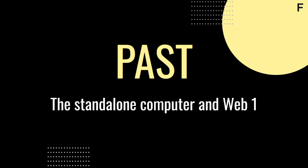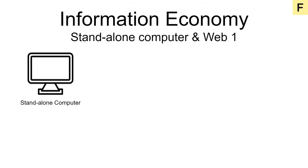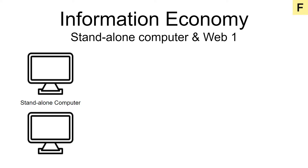The standalone computer in Web1. In order to understand where we are going, it's important first to know where we came from. In the beginning, there was the standalone computer, and your personal computer contained everything. If you wanted to share a file from your computer, you would have to download the file to a floppy disk and walk it over to the person you wanted to share the file with. They would then need to download the file from the floppy to their computer in order to use it.